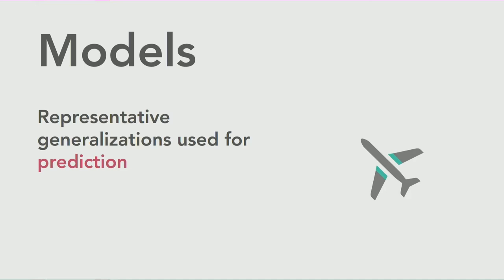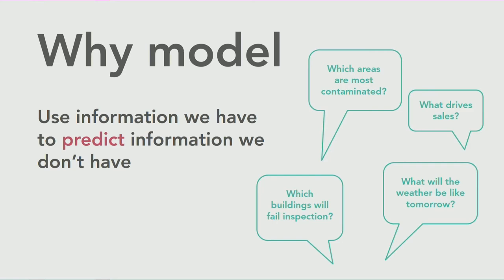Our goal, in the case of these regression tools and prediction tools, is to create a model — that generalization of reality — that will help us make accurate predictions. We model to predict information that we don't have, using information that we do have. For example, we might predict crop yield: we have some data on crop yield and attributes about those places, and we want to predict crop yields in places where we don't have data. It would be very expensive, time-consuming, and often impossible to have all the data, so we use limited data to predict what we don't have.